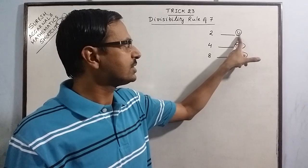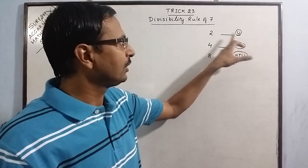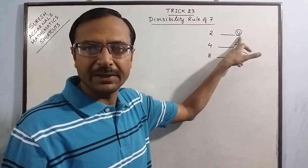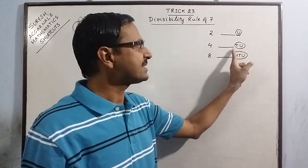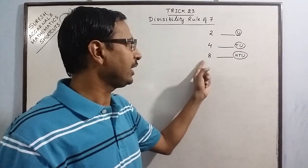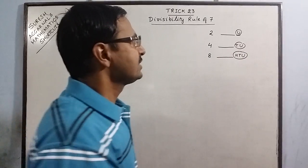We just watch numbers from the right side. For 2, we only have to inspect the unit digit of the number. For 4, the number at the tens and the unit digit. And for 8, 100, 10, and unit digit.